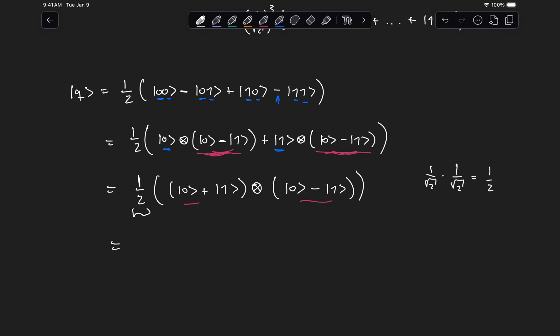So here we can have one over root two, zero plus one, tensored, one over root two, zero minus one, which is equal to state plus, tensored, state minus.